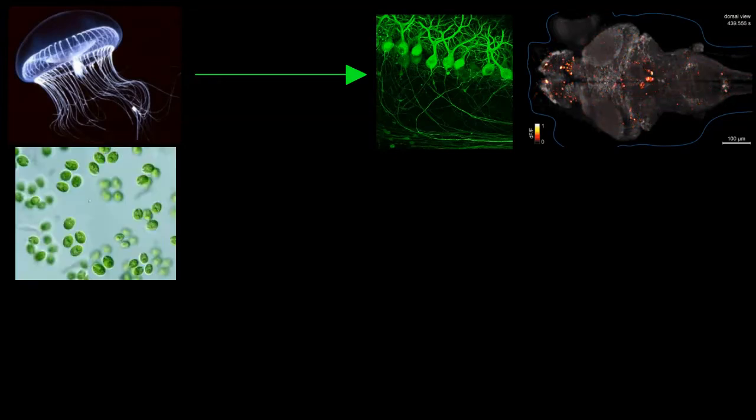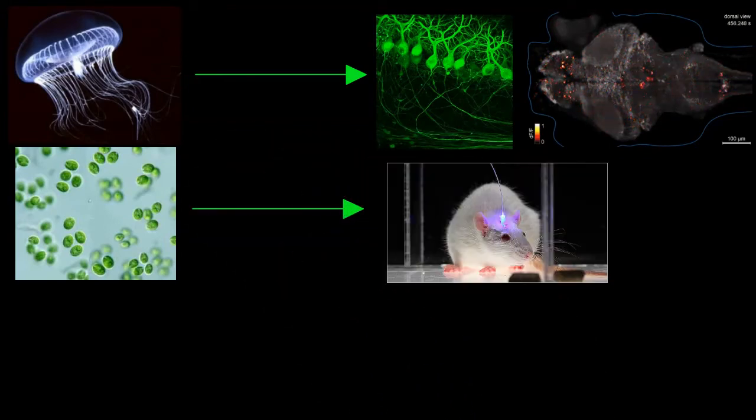A light-sensitive channel, part of the photosynthetic machinery of a single-celled marine algae, can be used to manipulate neuronal activity with light.